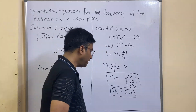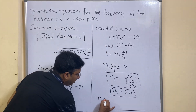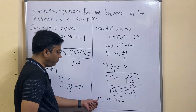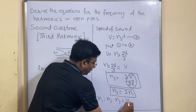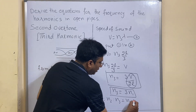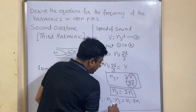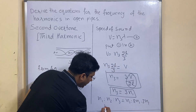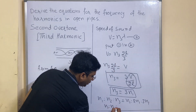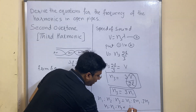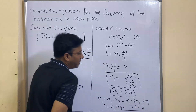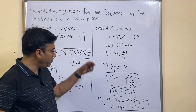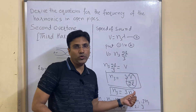Looking at all the frequencies: for the first case we got n1, for the second case we got 2n1, and for the third case we got 3n1. So finally we can write: n1 is to n2 is to n3 as 1 is to 2 is to 3. That means the ratio of frequencies in case of open pipe is 1:2:3.